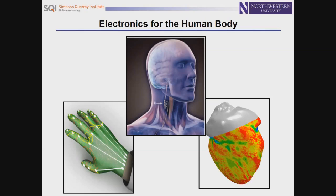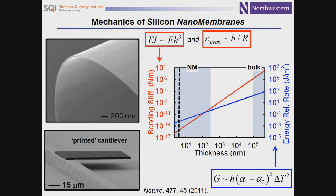Brain-interfaced electronics for mapping and stimulating brain processes, and similar classes of devices as cardiac interfaces, are one example. Skin-integrated systems for continuous wireless tracking of physiological status represent some of the various areas we're interested in. A central question in activities of those sorts is: what are the foundational materials you could consider for electronic or semiconductor device technologies that have biocompatible features, mechanical properties, and materials properties that are intrinsically biocompatible?